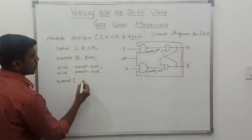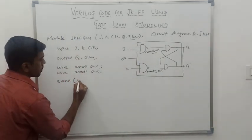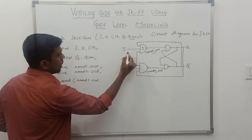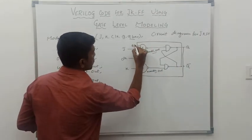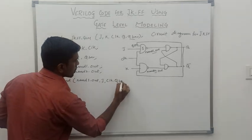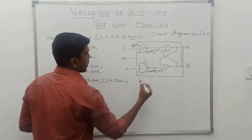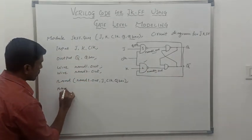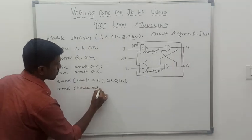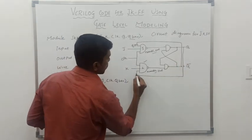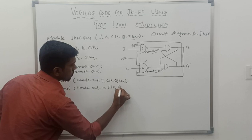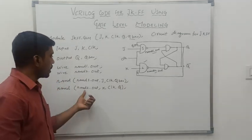First NAND operation — NAND off. Here the output is NAND 1 out. This is the output of the first NAND gate. Inputs are J, clock, and Q bar — these three signals are input of NAND gate 1. Then we go to the next NAND operation, NAND gate 2. Output of NAND gate 2 is NAND 2 out. Inputs are K, clock, and Q — these three signals are input of NAND gate 2. NAND 2 out is the output signal.